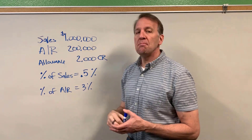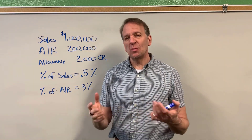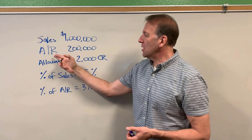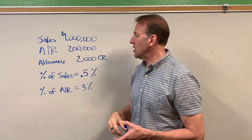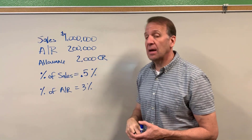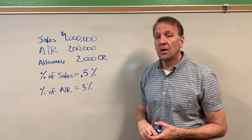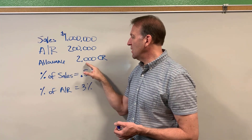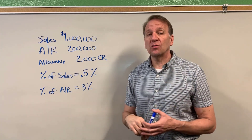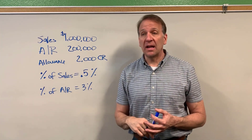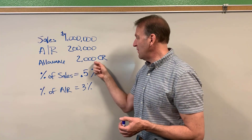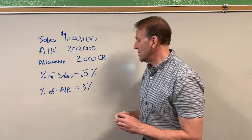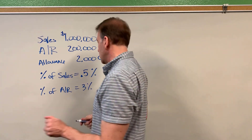Our sales are $1 million — we're going to assume it's all credit sales. Our accounts receivable balance at the end of the year is $200,000. Our current allowance has a balance of $2,000 in it, and you have to make sure that you know what kind of balance that is — it's a credit balance.